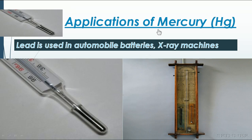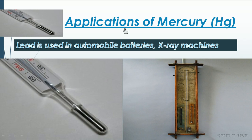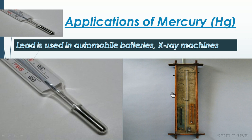Next is mercury, a well-known metal that is available in liquid state. It is used in thermometers because it expands uniformly on heating. Mercury is also used in barometers — a barometer is mainly used for measuring pressure. So mercury is used in thermometers as well as barometers. These are some of the uses of mercury.